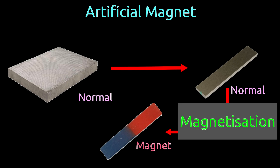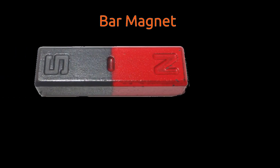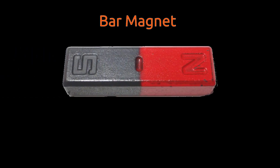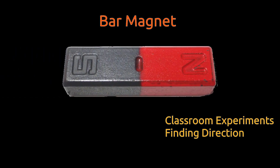Let's see different shapes of artificial magnets. Bar magnets are mostly used in classroom experiments. These magnets are also used in finding directions.